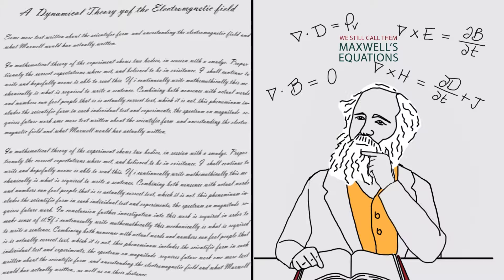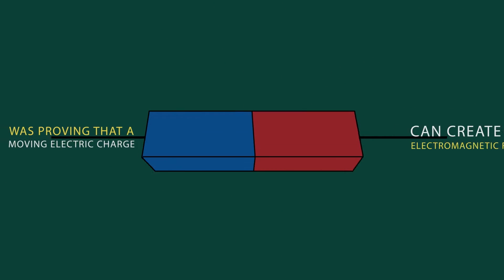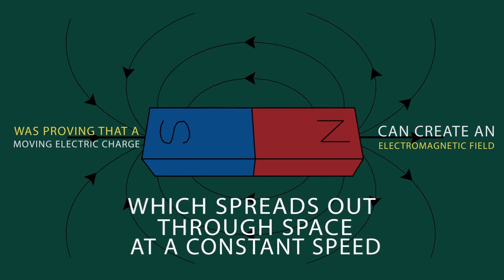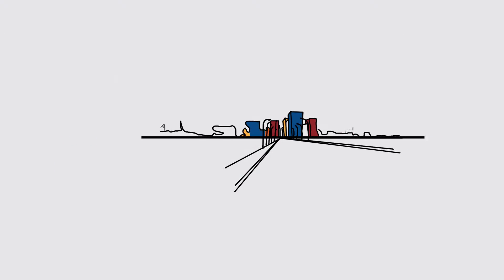His greatest discovery was proving that a moving electric charge can create an electromagnetic field, which spreads out through space at a constant speed, which just happens to be the speed of light.